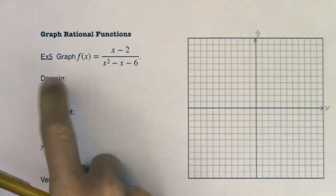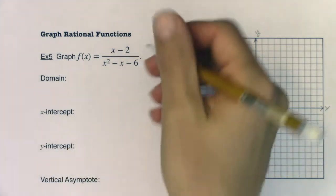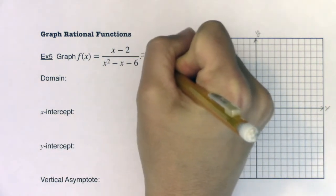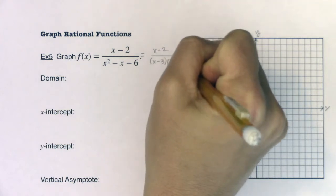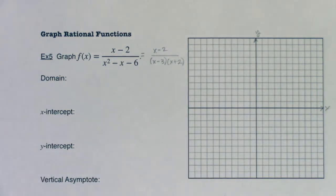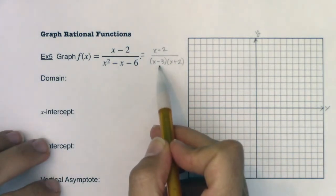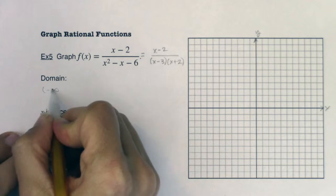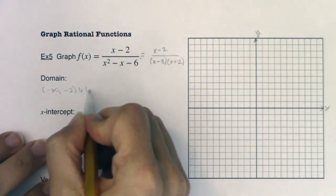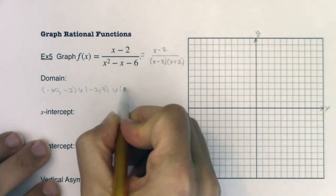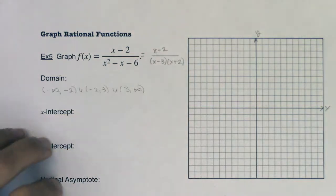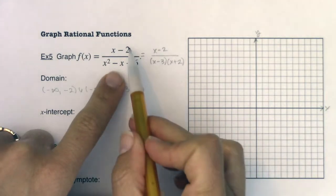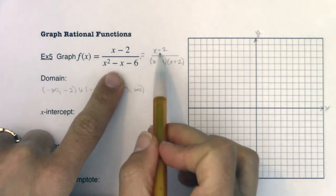I always want to start with domain. I need to figure out when my denominator is zero. We've factored this already — the denominator zeros out at two places: x=3 and x=-2. So my domain is negative infinity to -2, then -2 to 3, then 3 to infinity. Anytime you want to find your domain, set your denominator equal to zero, and factor both numerator and denominator if you can.